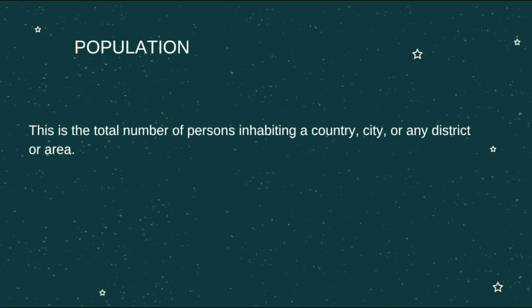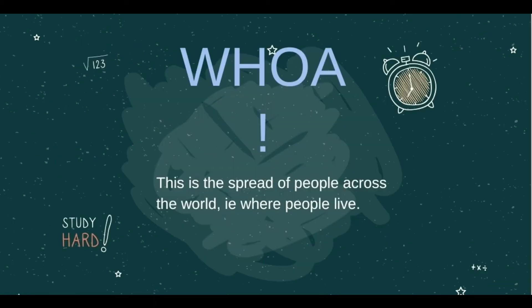A very important theme we should highlight when talking about population is population distribution. Simply put, population distribution is the spread of people across the world — it's where people live. Do more persons live in the south? Do more persons live in the north, the east, or closer to hilly areas? So it's the spread of people and where they live.